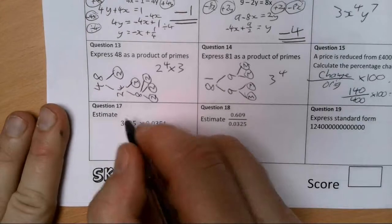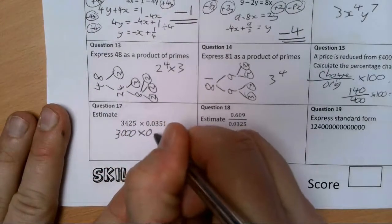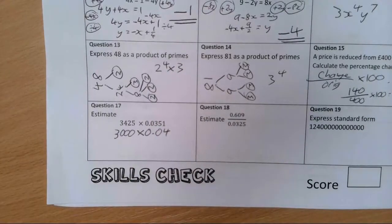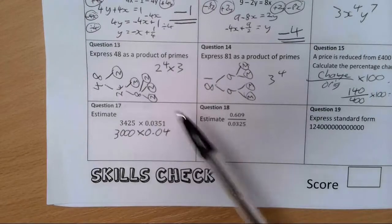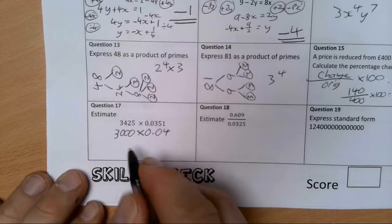Estimate. So estimation is something in the number topic which we worked on. We're going to work to one significant figure, so this gives me 3000 times by 0.04, because we're doing that to one significant figure. To one significant figure it's the first non-zero number, so it's this hundreds column, and I have to round to the nearest hundred which in this case is 0.04. So that is going to give me 120.